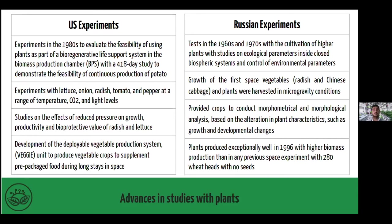Then some experiments with lettuce, onion, radish, tomato, and pepper, trying to understand how they behave with different temperature rates, CO2 rates, and light levels. After that, studies on the effects of pressure and productivity and bioprotective value of some crops — especially leafy greens, radish, and lettuce — and the development of the Veggie chamber, which allowed astronauts to eat crops for the first time in space on the ISS.